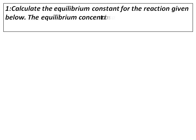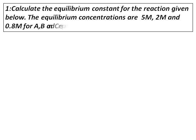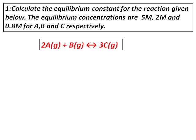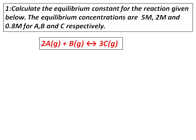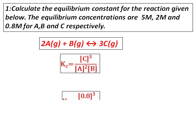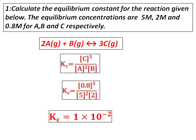We will start with the first question on equilibrium constant. Calculate the equilibrium constant for the reaction given below. The equilibrium concentrations are 5 molar, 2 molar, and 0.8 molar for A, B, and C respectively. The equation is 2A plus B giving you 3C. Kc equals concentration of C raised to the power of 3, divided by concentration of A raised to the power of 2 times concentration of B. Substituting the values, I get Kc equals 1.0 times 10 to the power of negative 2.